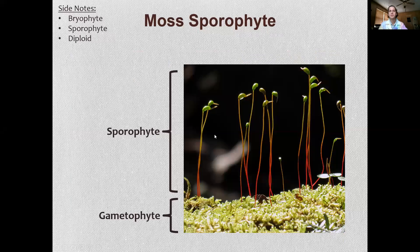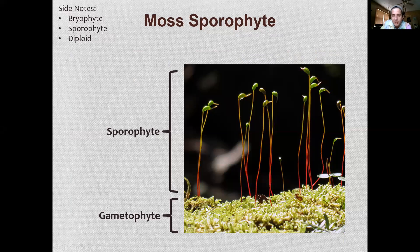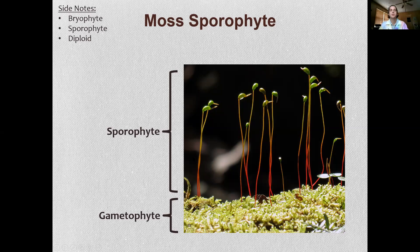If you see mosses in the park and they're producing those long little stalks with tiny flower-bud-like tips, that would be the sporophyte generation. The small leafy structures at the bottom are your gametophytes. Sporophyte = diploid; gametophyte = haploid.